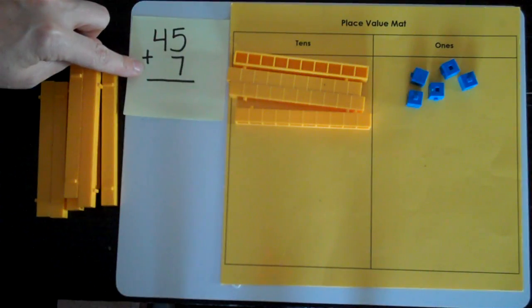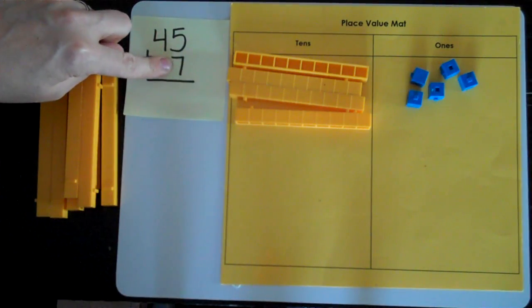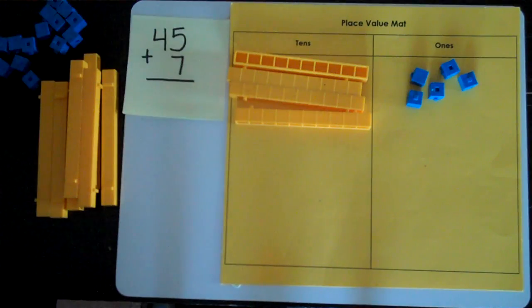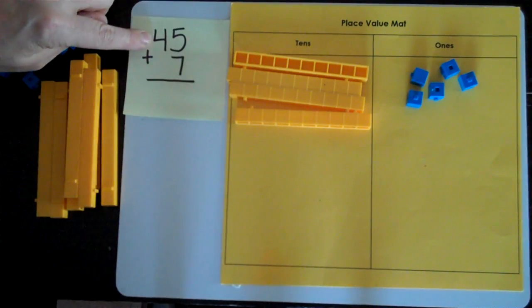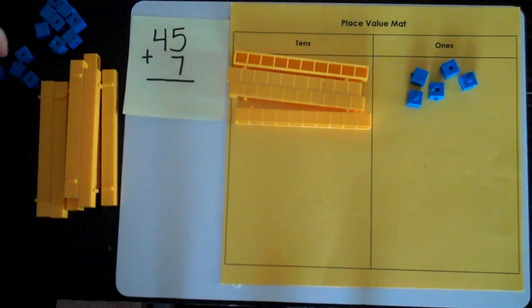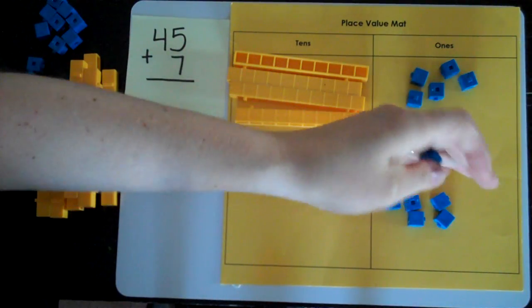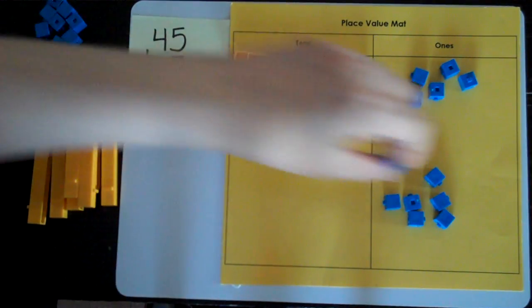Next I'm going to go on to my next number which has only one digit. Seven. Seven ones. I want it to be clearly different than the 45 just like I can clearly see 45 and I can clearly see 7. One, two, three, four, five, six, seven.